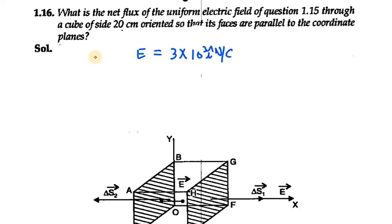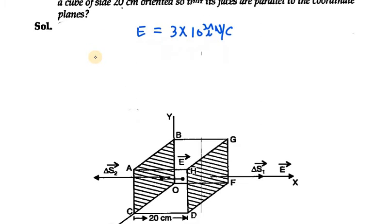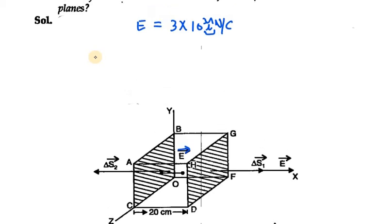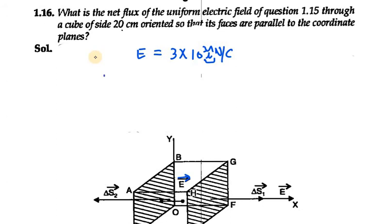We are given a cube of 20 centimeter. The electric field direction is i cap, therefore it must be in the x-axis. Now ΔS₁ of face GHDF is towards the positive x-axis, and ΔS₂ is toward the negative x-axis.